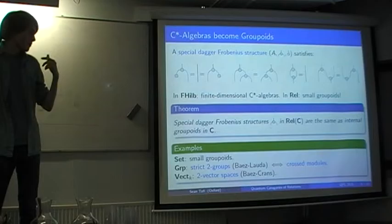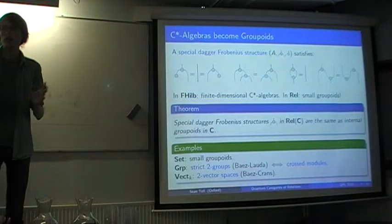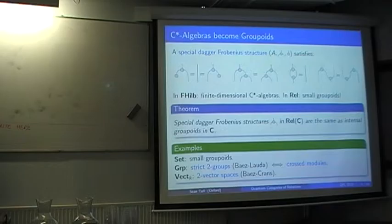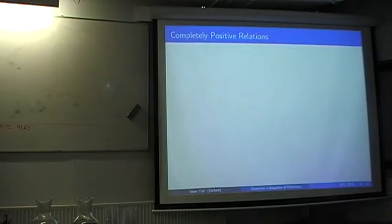Internal groupoids in Set are just small groupoids. In Group, they're known as strict 2-groups by John Baez and Alissa Crans, and they're the same thing as crossed modules, which are well-known from homotopy theory. Similarly, internal groupoids in the category of vector spaces have been studied. In higher category theory there are 2-vector spaces, though they're actually a bit different from the equivalent spaces here — not quite the same notion.